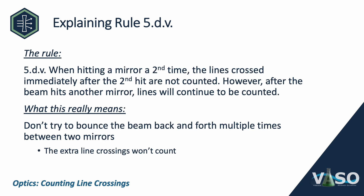There's one last special case: Rule 5D.5. What it really means is that you don't want to try and bounce the beam back and forth multiple times between two mirrors. If you do, there's nothing wrong with that — your setup will still score — but the extra line crossings from the extra bounces will not count. Only the first crossings between those two mirrors will count. Setting up a configuration like this is actually remarkably difficult, so now you know you don't have to try.